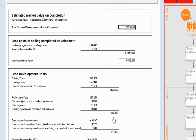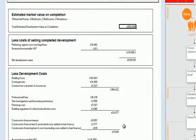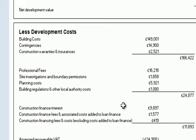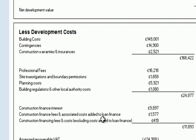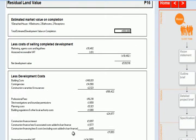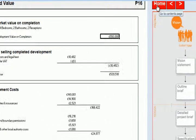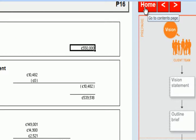One thing to just make a note of here is this section called construction finance costs and finance fees, because we're going to look at that in terms of the abbreviated model which we're going to look at now. So let's just leave that for now.